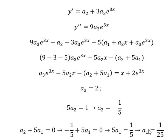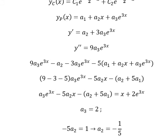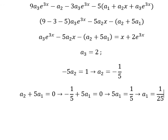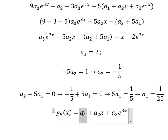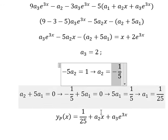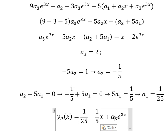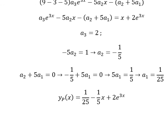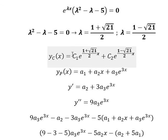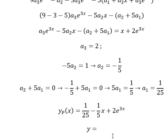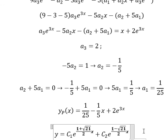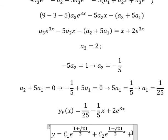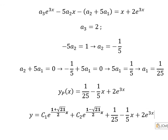Now we input a1, a2, and a3 back into y_p. So a2 is negative 1 over 5, a3 is 2. We now combine the complementary solution and the particular solution to get the final answer. This is the end — thank you for watching.